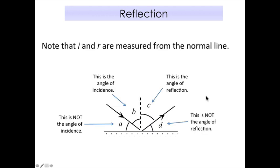The reflecting surface is shown, with the normal as a dotted line. A light ray and a reflected ray produce four different angles. Which is the angle of incidence and which is the angle of reflection? Angle B is the angle of incidence and angle C is the angle of reflection, because both are measured from the ray to the normal. Angle D is not the angle of reflection because it touches the surface, which is incorrect.